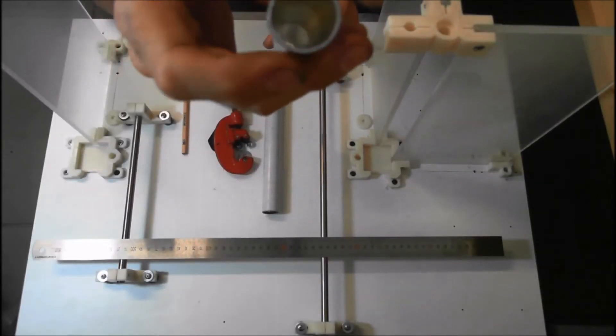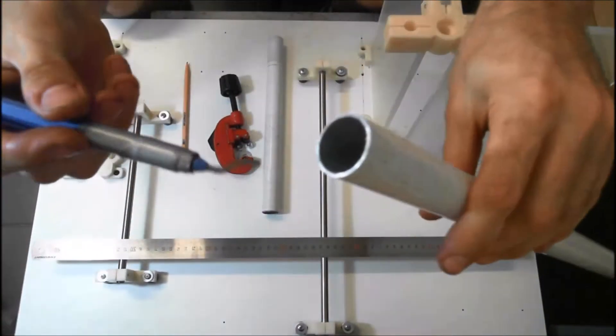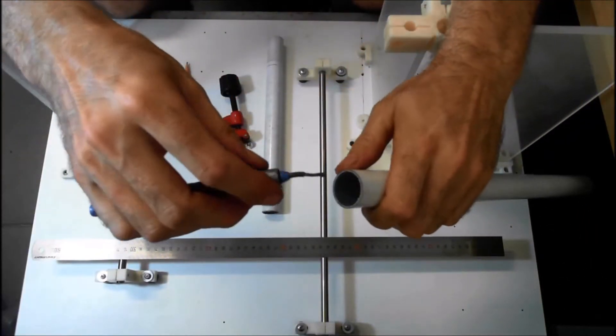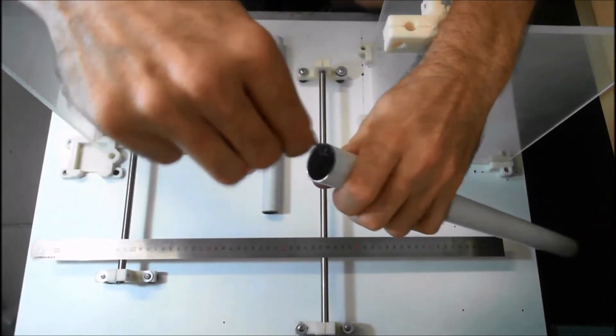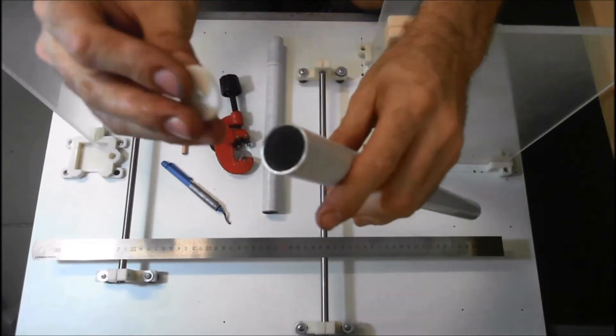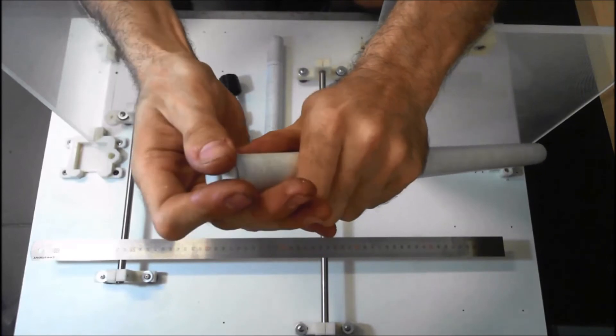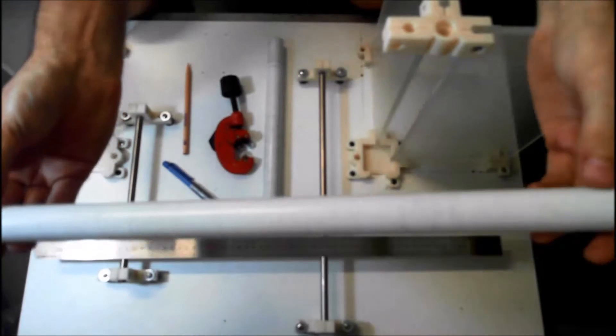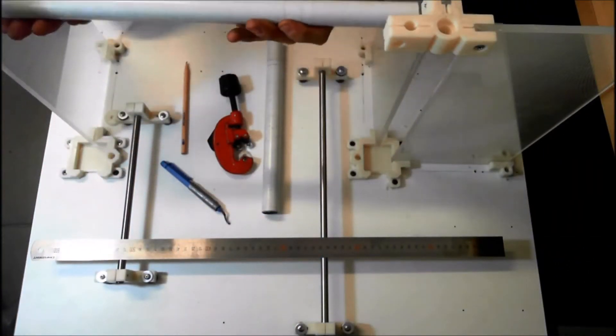We've just got to take that burr off. I'm going to take that burr off with a deburring tool. We'll check to make sure the bushes fit in the ends. You may need to press them in. That one's fitting in. So it's ready to mount onto the printer near the top.